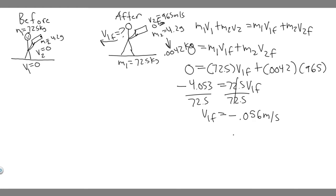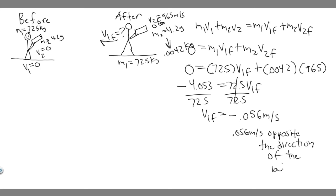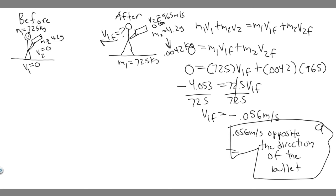So we just say 0.056 meters per second opposite the direction of the bullet, because positive was the direction we set the bullet to go, so negative means it's going in the opposite direction. So we say opposite the direction of the bullet. That's the answer to part A — V1-final is 0.056 meters per second opposite the direction of the bullet.